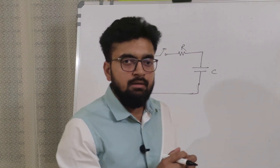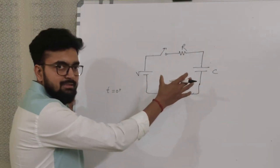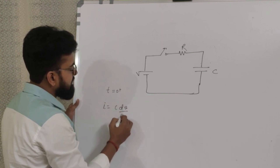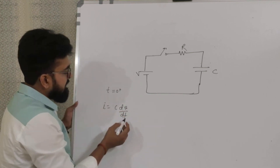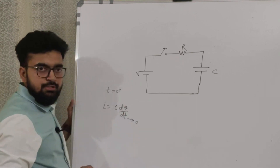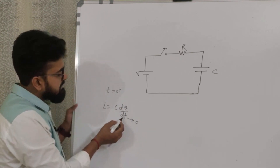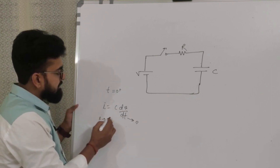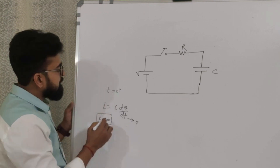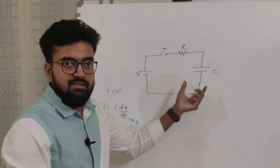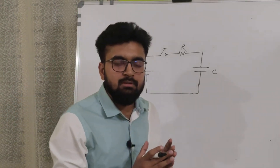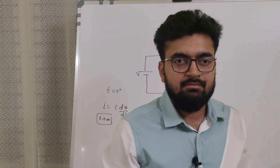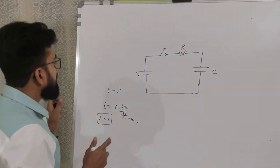The reason the capacitor behaves as a short circuit is that it does not allow a sudden change in voltage across it. If we want some voltage across the capacitor, we need to supply infinite current in a very small time — since i equals C times dv/dt, when dt approaches 0, i approaches infinity — which is practically impossible.